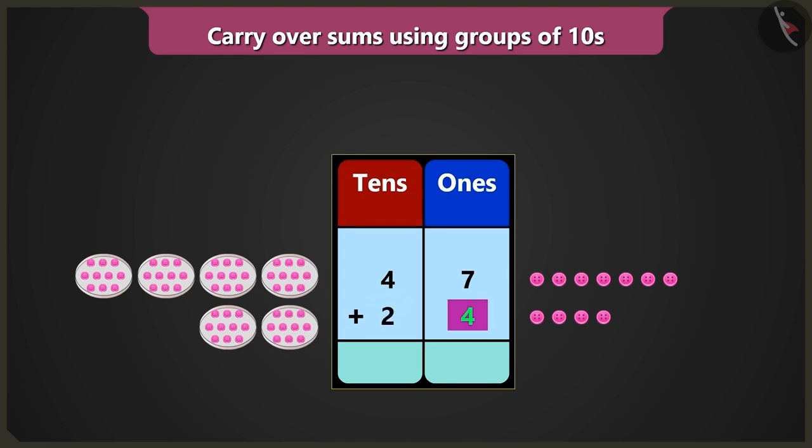Now in the box of ones, when seven ones are added to four ones, we count after seven: eight, nine, ten, and eleven.